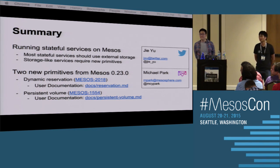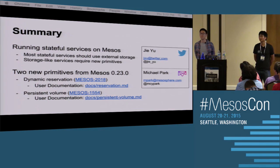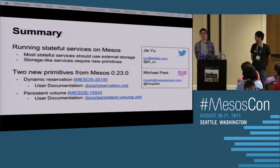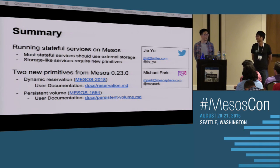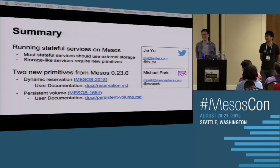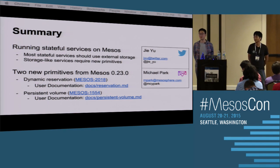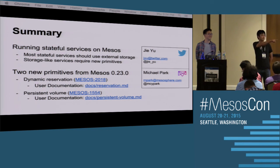Question: Does Marathon have the ability to do replication of state of containers if a slave node dies? From Adam: not yet. Marathon doesn't even support the persistent volumes feature yet. The first step would be to get Marathon to use persistent volumes, which is something that's on the list.